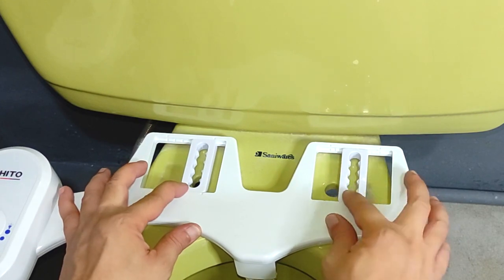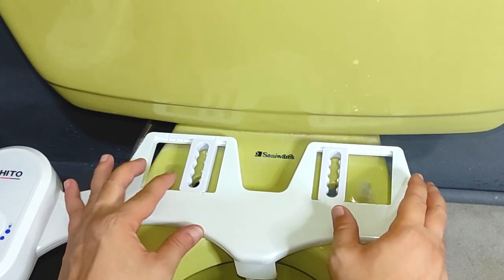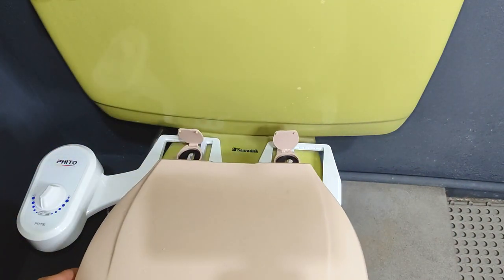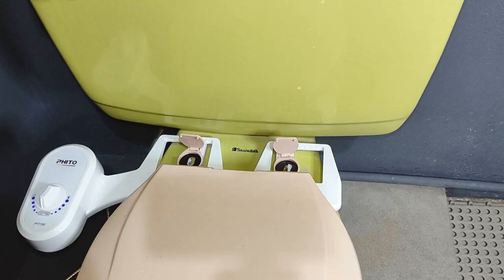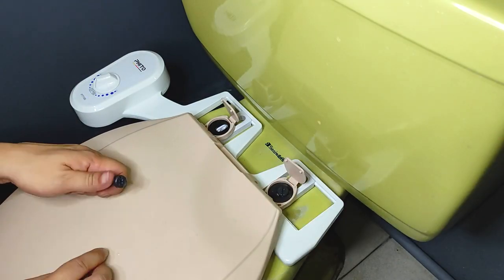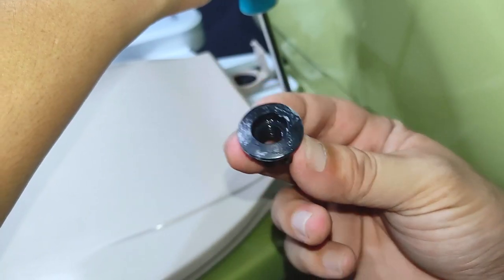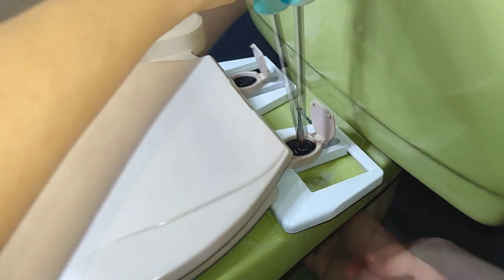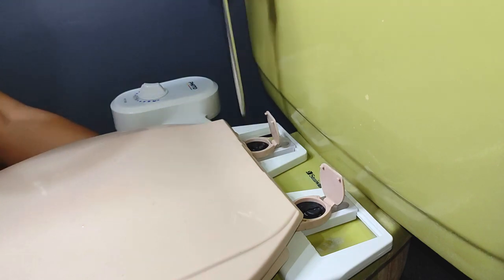Then slide the mounting plates over the holes. Then we return the toilet seat and cover on top, making sure that all the holes align. We secure everything down with the bolts and locking nuts. That's one and that's two.